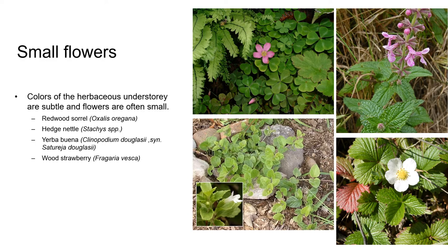Because the production of lignin — one of the main support and strengthening components of plant cell walls — is energy intensive, low-growing herbaceous plants dominate the understory in the Coast Redwood Forest. Their flowers are often small and not brightly coloured. Four of the most common examples you're likely to see locally include redwood sorrel, hedge nettle, wild strawberry or wood strawberry, and yerba buena.